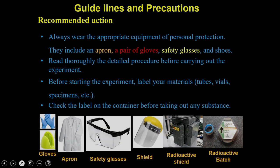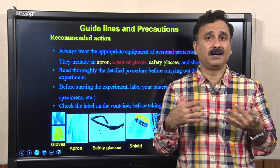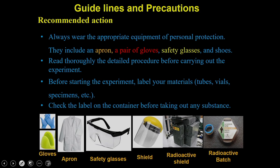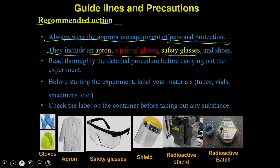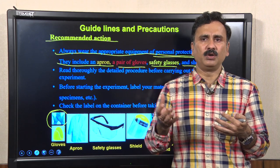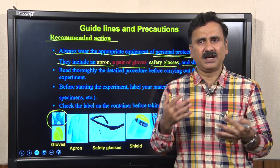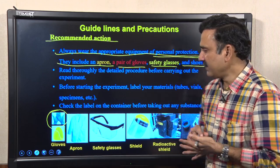There are guidelines on recommended actions and on what you should not do inside the lab. In recommended actions, when you enter a lab you always wear appropriate personal protective equipment, including an apron, a pair of gloves, safety glasses, and shoes. In the lab, you use two different types of gloves. One is latex gloves, which protect you from exposure to chemicals or dust generated in the laboratory. The other is rubber gloves, used when handling hot liquids — for example, taking something out of the microwave.